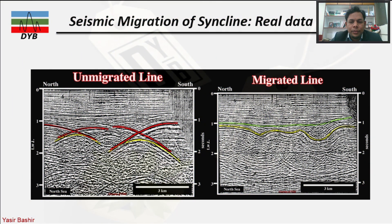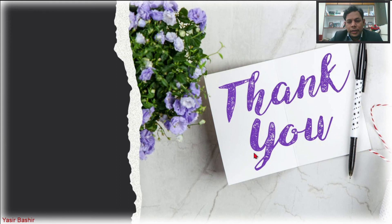As a real case example, an unmigrated 2D seismic line showing the north-south direction contains visible bowties highlighted in red. Once the bowties are migrated, a small syncline appears in one location and a larger syncline appears in another. That concludes the understanding of seismic migration — why we need it and what its main objectives are. We will continue with the next topics in the next lecture. Thank you and have a good day.